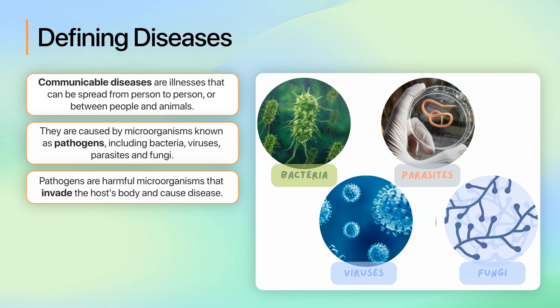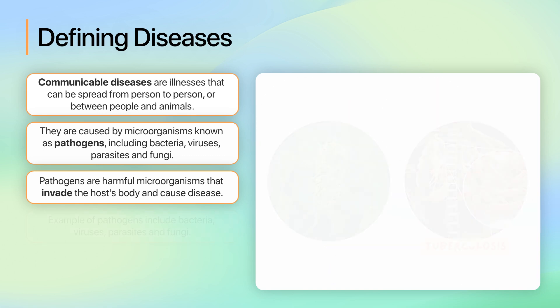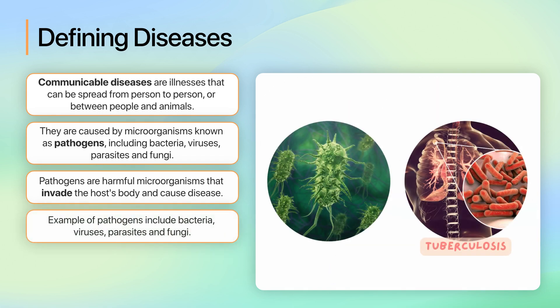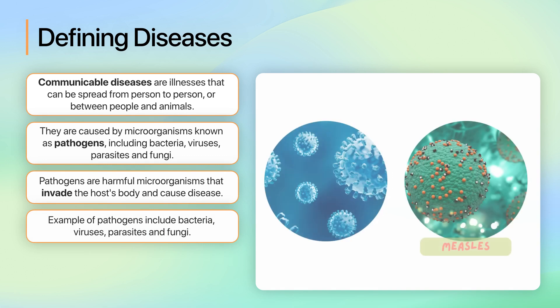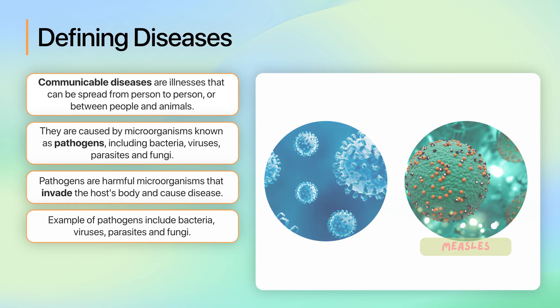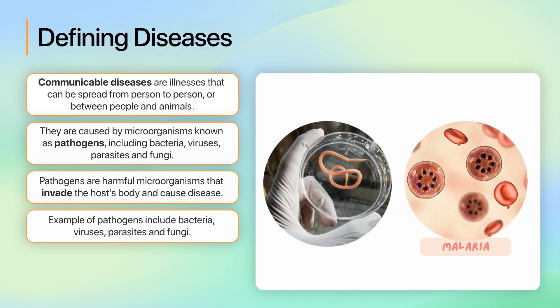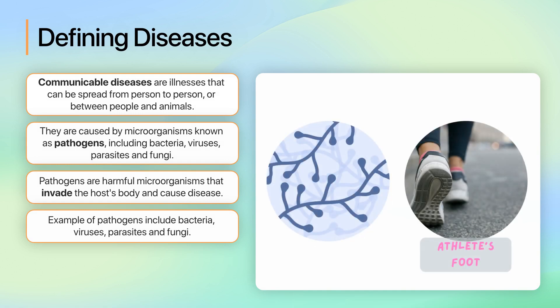Here are some examples of pathogens. Bacteria are single-celled organisms, for example, tuberculosis. Viruses require a host cell to reproduce — measles is a virus. Parasites live on or in a host organism, for example, malaria. Fungi can infect various parts of the body, for example, athlete's foot.